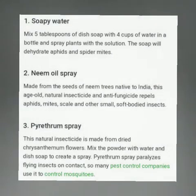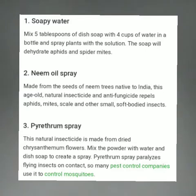The first one is soapy water. Mix 5 tablespoons of dish soap with 4 cups of water in a bottle and spray the plant with the solution. This is the easy method — the soap will dehydrate aphids and spider mites.